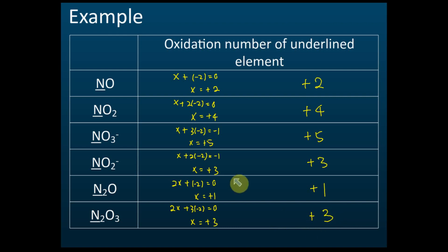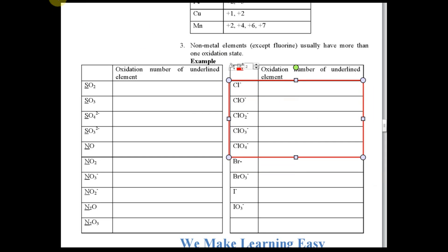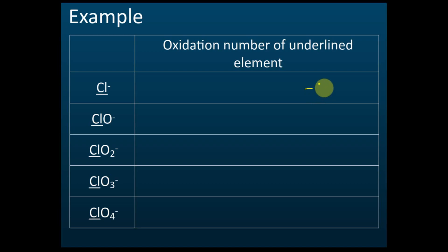If you have done the exercise, you can check your answer here. This is the working, and this is the answer. You can see that there's no underline marked — please put the underline for the chlorine. Find the oxidation number of the chlorine here, and also for bromine and iodine.